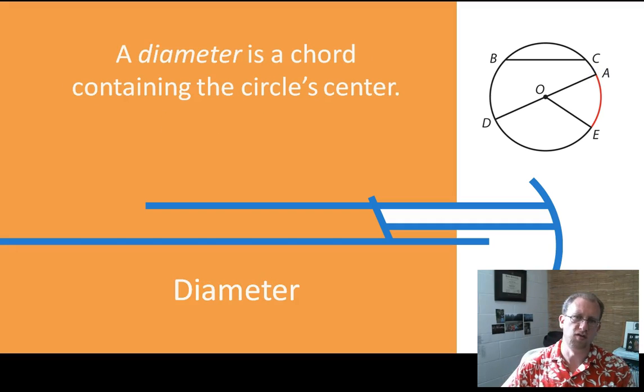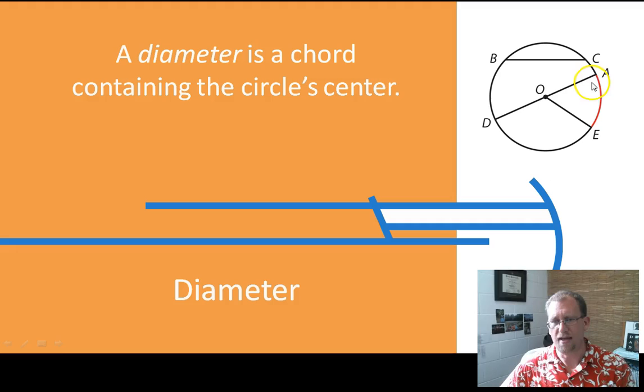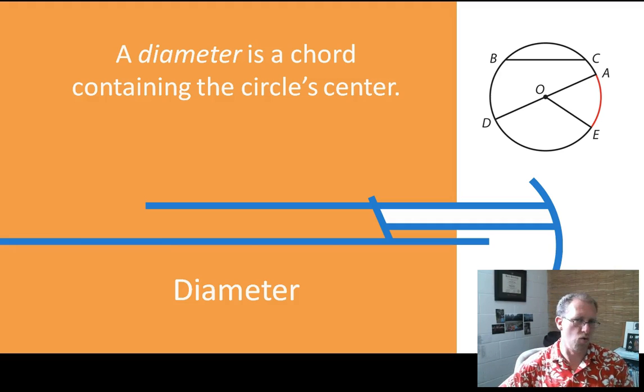Now, there are particular kinds of chords called diameters, where the chord contains the circle's center. So DA is a chord, but because it contains the circle's center, it contains point O, which is the center of the circle. Then DA is a diameter. DA is the chord, and because it contains the center, it's not just any chord, it's the diameter.